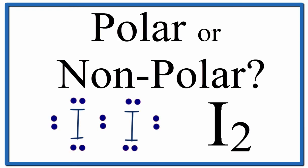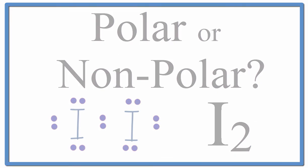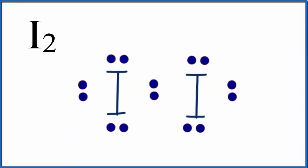To determine if I2 is polar or nonpolar, we'll look at the Lewis structure. That tells us where the valence electrons are distributed around the molecule, and that's important because it helps us determine polarity.